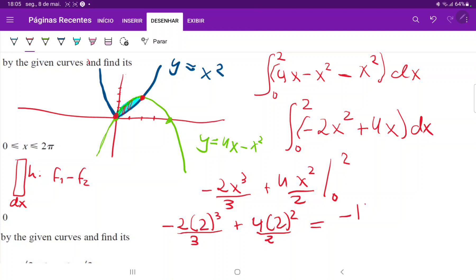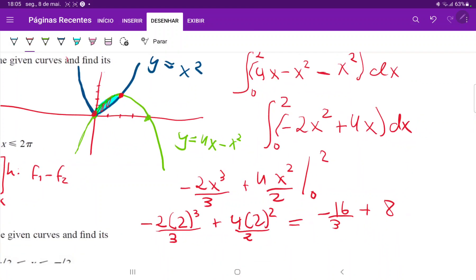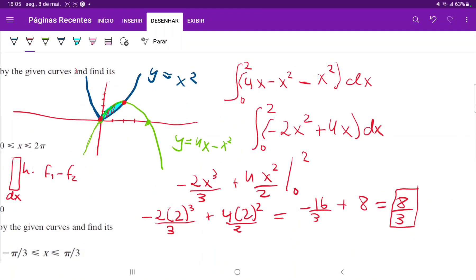So this is minus 16 over 3 plus... That is 4 times 4 divided by 2 plus 8. So let's plug that into our calculator, plus 8. And this gives us 8 thirds, which is the area between these two curves. So I hope that you guys were able to see that all we did was we sketched the functions, we saw where they intersect, and then we integrated that area using the upper function minus the lower function.